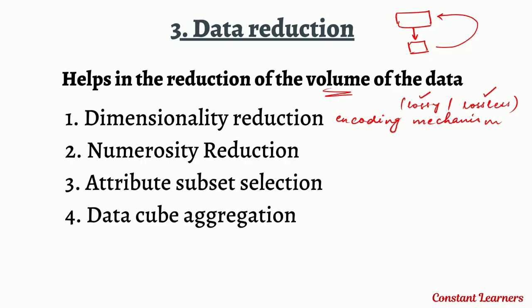Next is numerosity reduction, where the actual data set is transformed into data models — represented in the form of data models. For example, a tabular data set is transformed into the form of a graph.